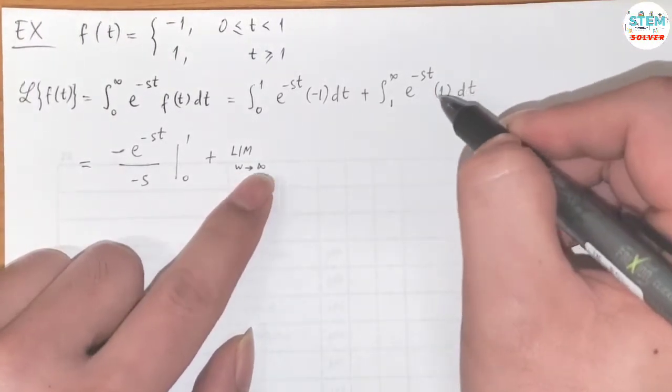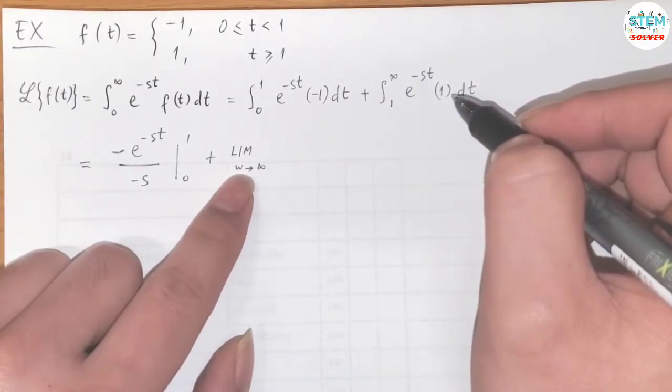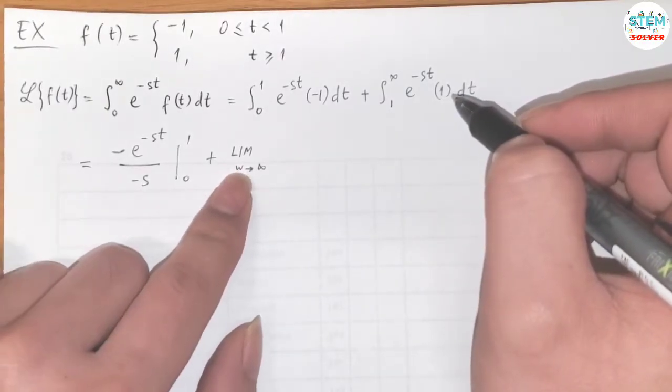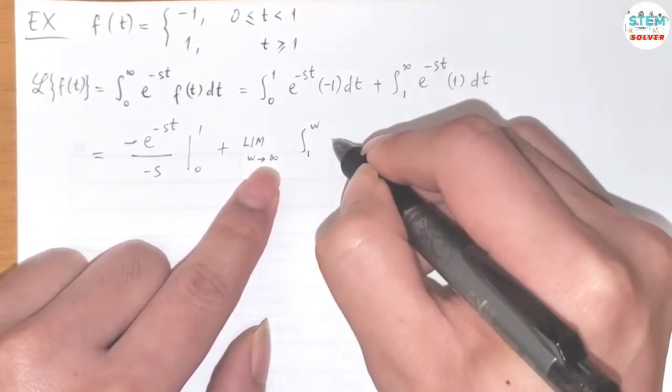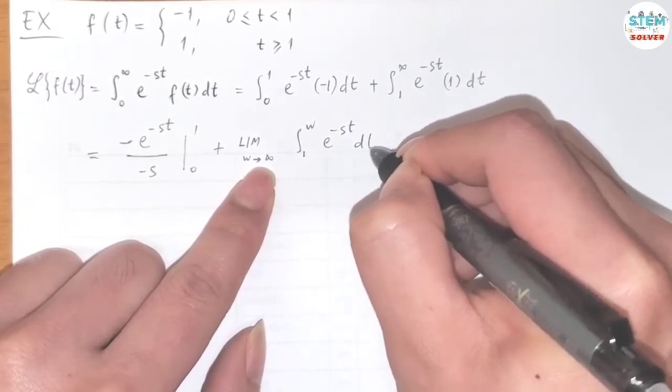So we have limit as w goes to infinity of the integral from 1 to w of e to the negative st dt.